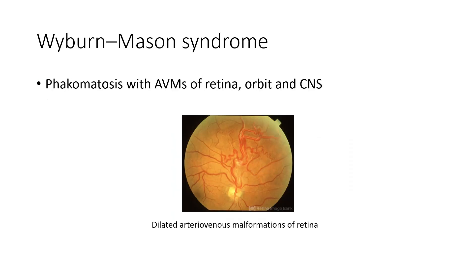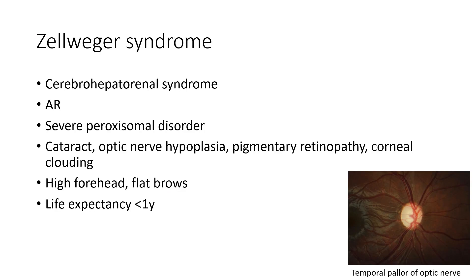Next is Wyburn-Mason syndrome. It is a phacomatosis with arteriovenous malformations of the retina, orbit, and central nervous system. A fundus image shows dilated arteriovenous malformations in a case of Wyburn-Mason syndrome.